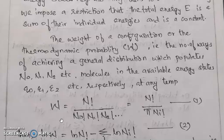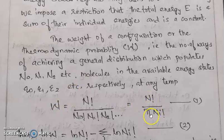We write the equation: W equals N factorial divided by N0 factorial times N1 factorial times N2 factorial, that is N factorial divided by the product Π Ni factorial. That is equation number 1.